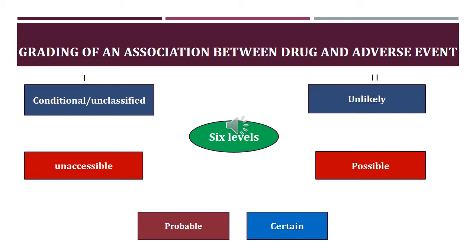The next category is called probable. Probable means if an adverse event has occurred but that adverse event cannot be explained by some other drug or disease, then it is called probable.